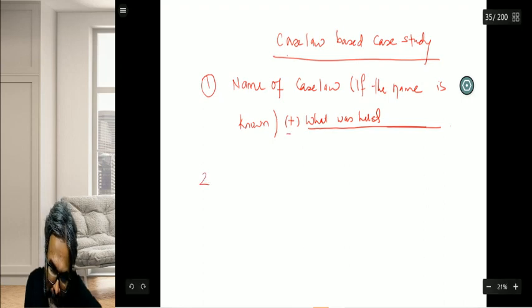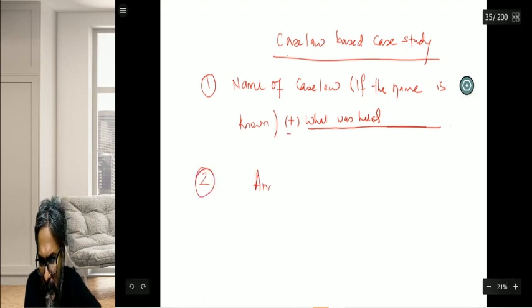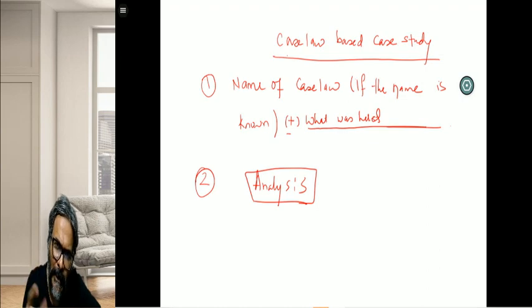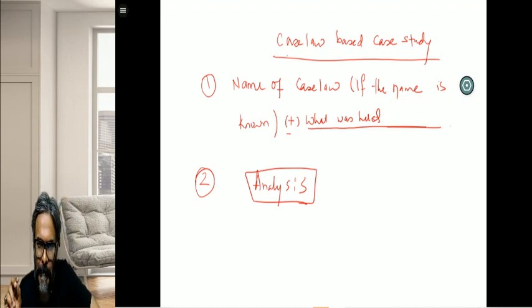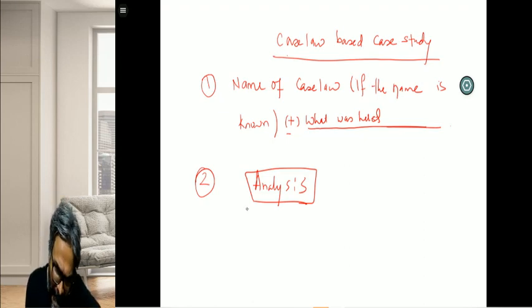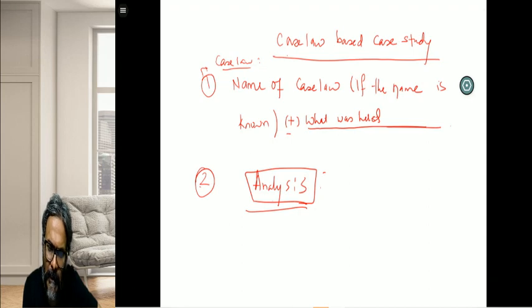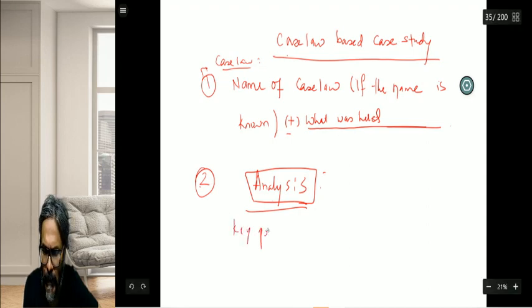That is how you write the name. Second would be the analysis of the case. This is the most important one. Write point number one directly with the name because it tells the examiner you know the case law. Second point would be analysis. Please write the header: point number two - analysis. Here the key points of the judgment should be reproduced.